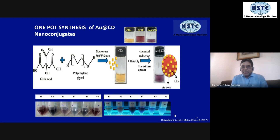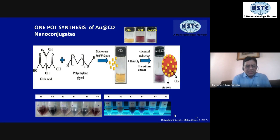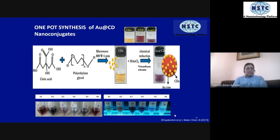If you want highly pure carbon dots, it is better to use high purity chemicals — that is the reason we are using citric acid here. We can use a cheaper chemical available at much lower cost but good purity. Polyethylene glycol is mixed with it and put in a domestic microwave oven for six minutes.